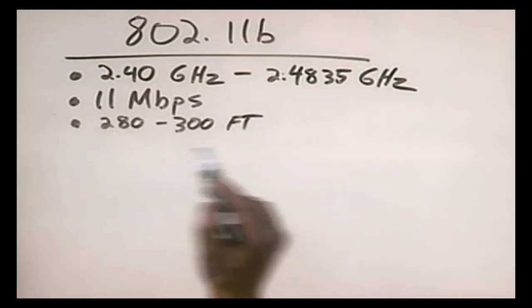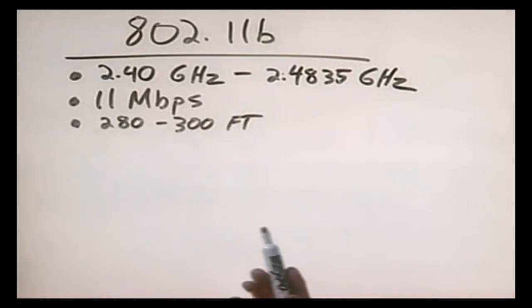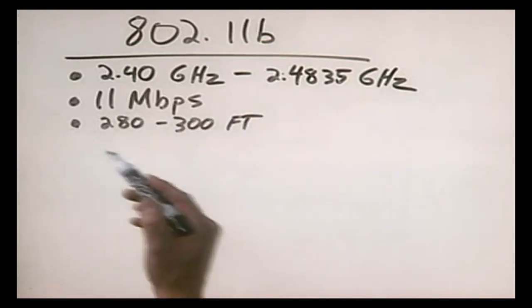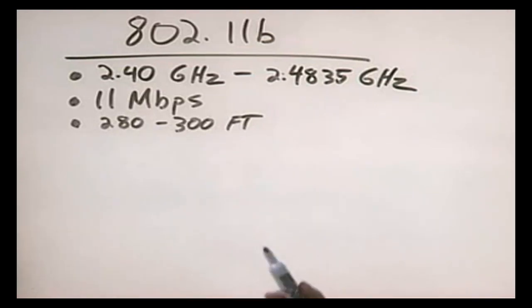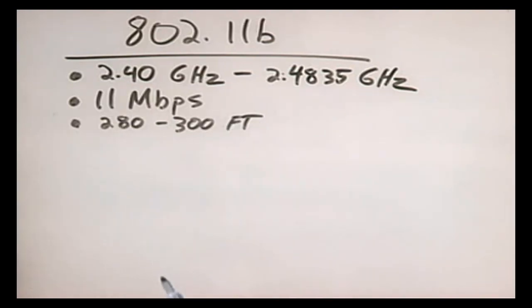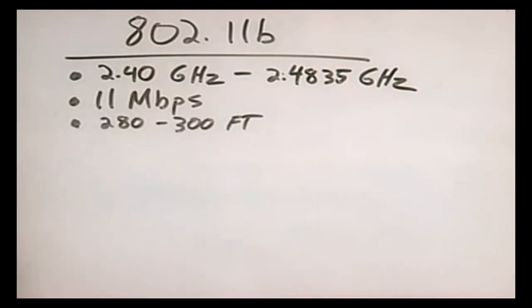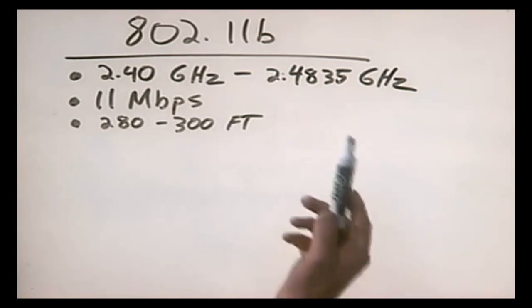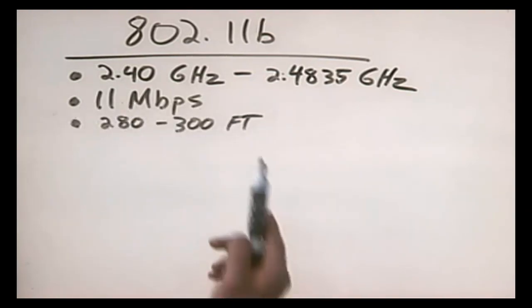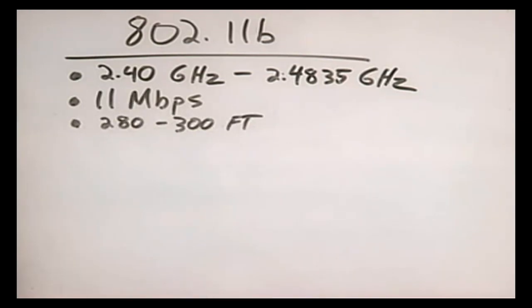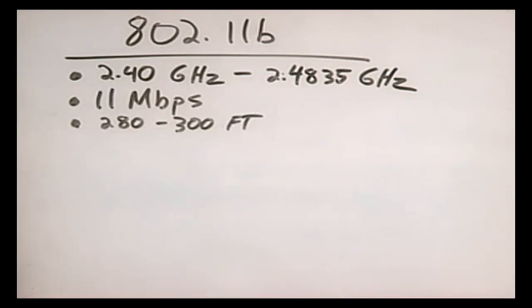That's the ideal range, and it's heavily impacted by structural issues. If you're inside a room with concrete walls, you're not going to get 280 feet — your signal will probably end close to the wall itself. If you're outside with no impediments, you'll likely get the full 280 to 300 feet. Anything in between — drywall, wood walls — reduces the range slightly, though not as badly as heavier materials like concrete.